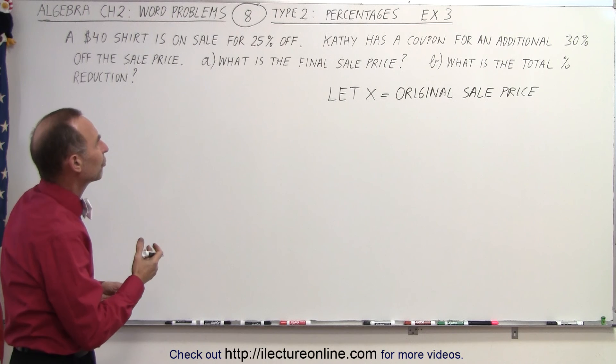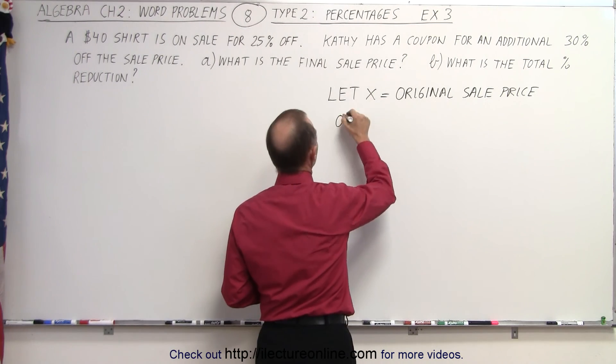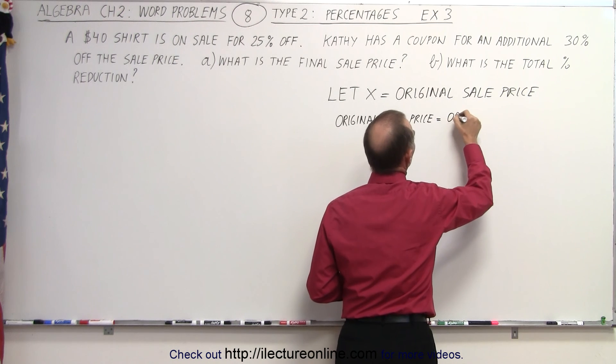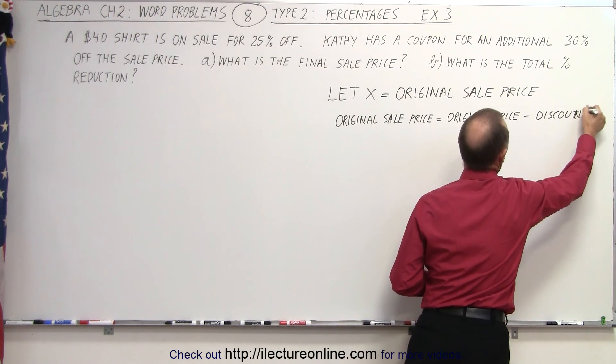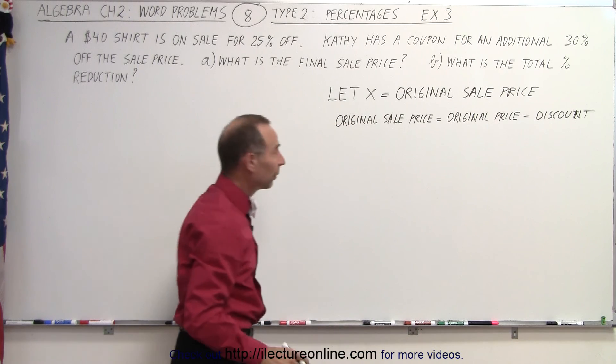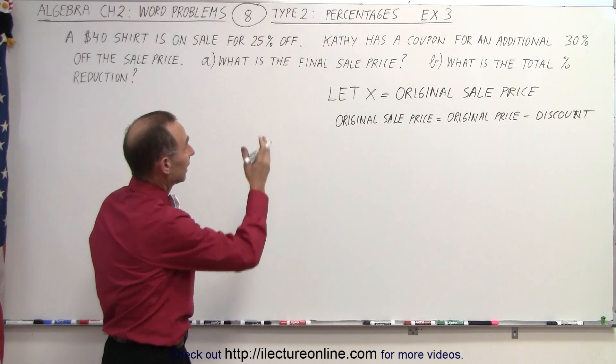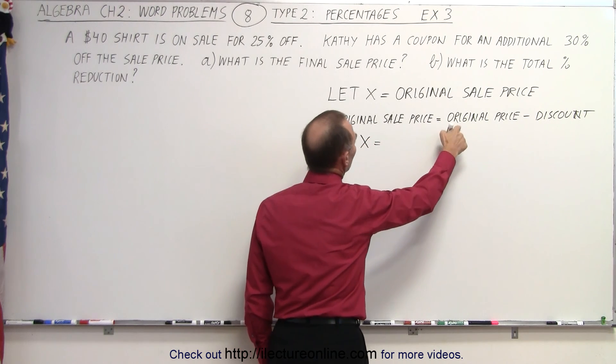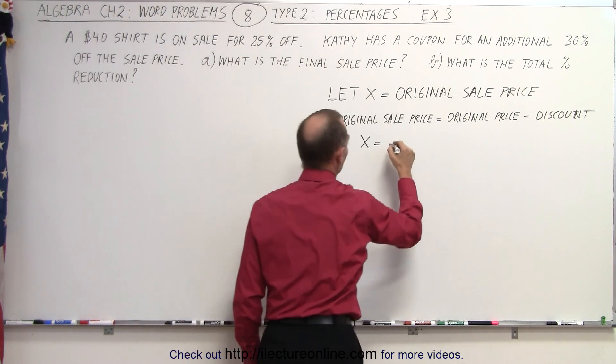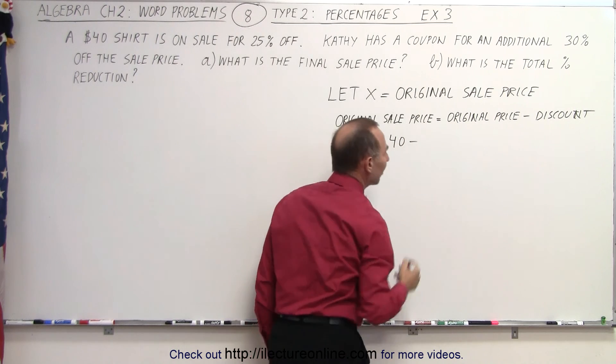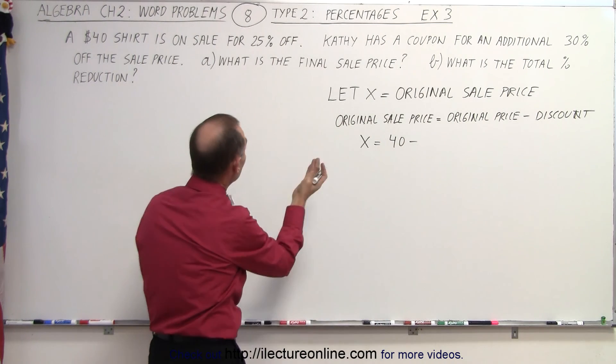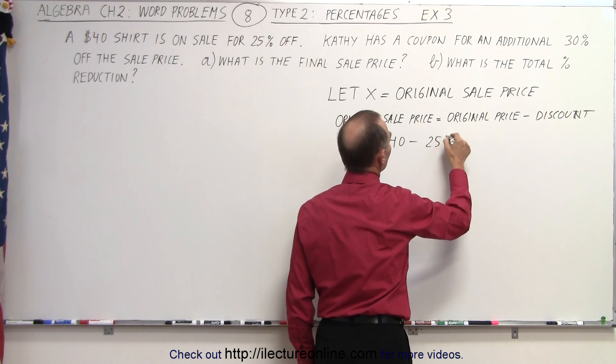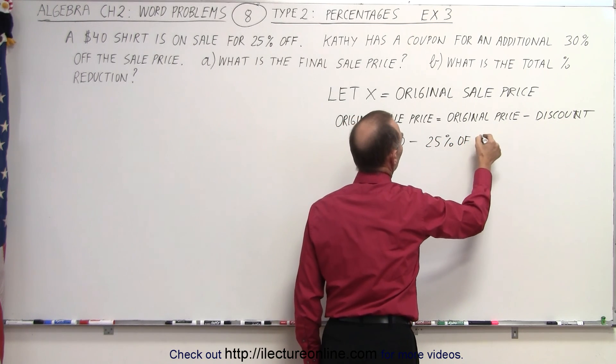So we need to come up with an equation for the original sale price is equal to the original price minus the discount. There we go. Alright. Well, the original sale price is represented by x. So x is equal to the original price, which is known, that was a $40 shirt. So that's $40 minus the discount. Now the discount would be 25% of the $40. So it's 25% of the $40.